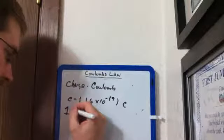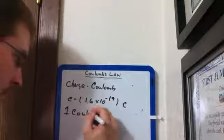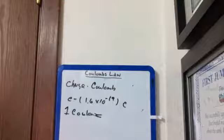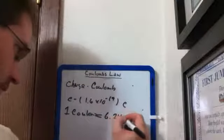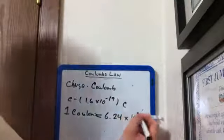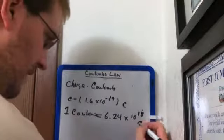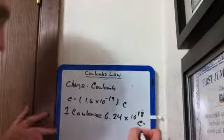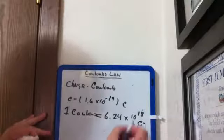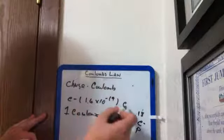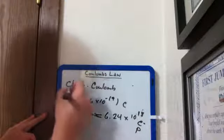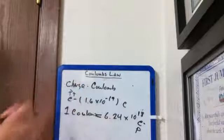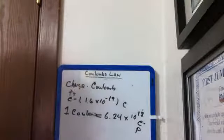So 1 coulomb is going to equal approximately 6.24 times 10 to the 18 electrons. And that could be the charge of an electron or the charge on a proton, because remember that the number is the same, 1.6 times 10 to the negative 19 coulombs, but for an electron it's negative, for a proton it's positive. Same number, but we just put a positive and negative to differentiate the type of charge.